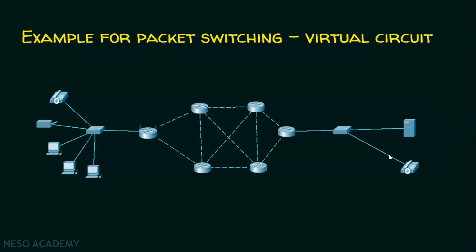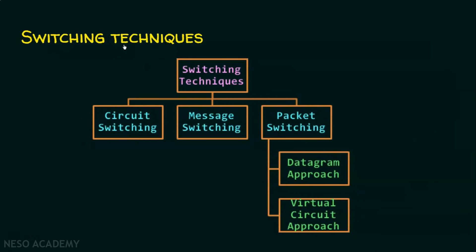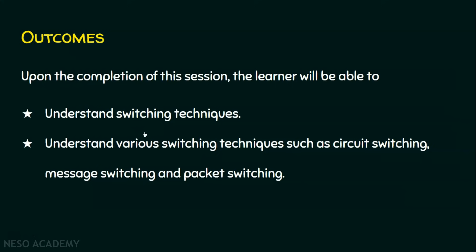To recap: switching means finding the best route for transferring data from sender to receiver in a large network. Switching has three techniques: circuit switching, message switching, and packet switching. Packet switching has two approaches: datagram approach and virtual circuit approach. I hope the session was informative. Thank you for watching.